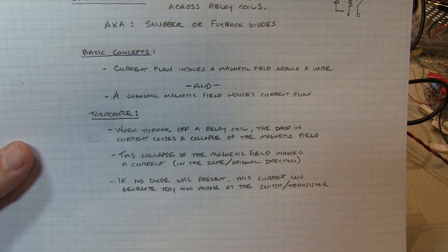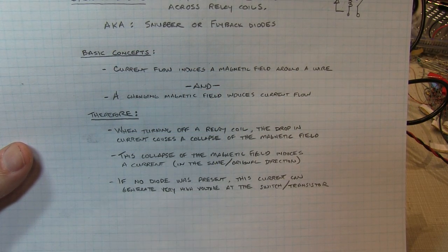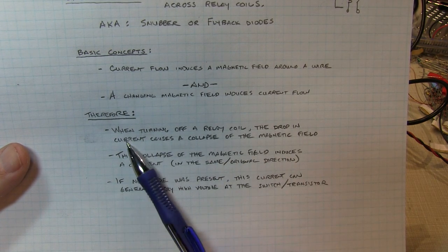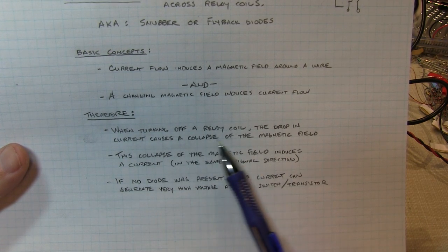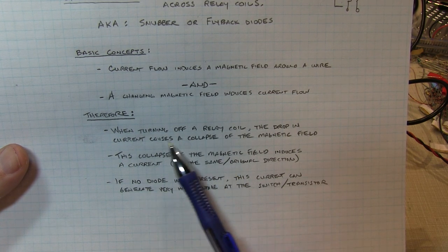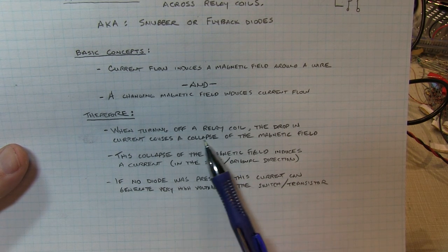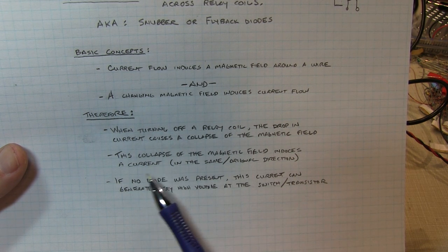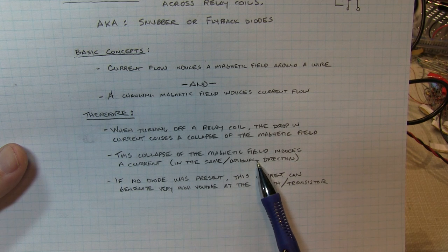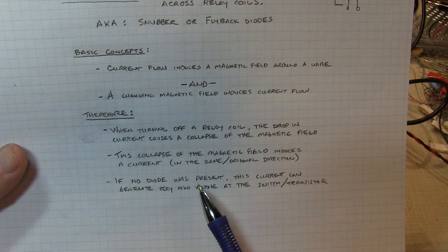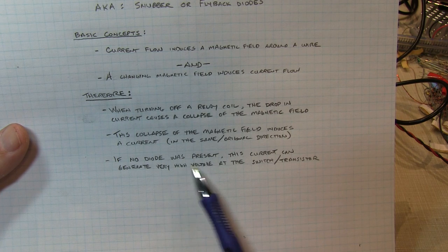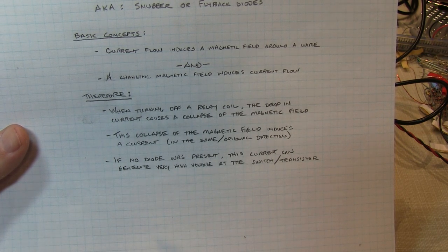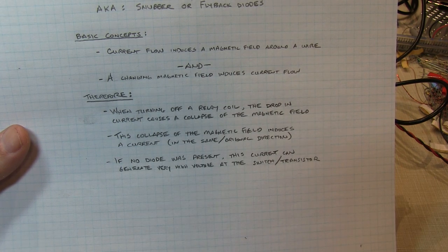So of course the same principle applies when we're talking about relays and switching them on or off. When you're turning off a relay coil, the drop in current causes a collapsing of the magnetic field. Even though we're not mechanically inducing it, we're electrically inducing this change in magnetic field. That collapse in the magnetic field induces a current in the same original direction that the current was originally flowing when the coil was on. And of course if no diode was present, this current can generate a very high voltage at the switch. So let's go take a look at a schematic and actually make some measurements.